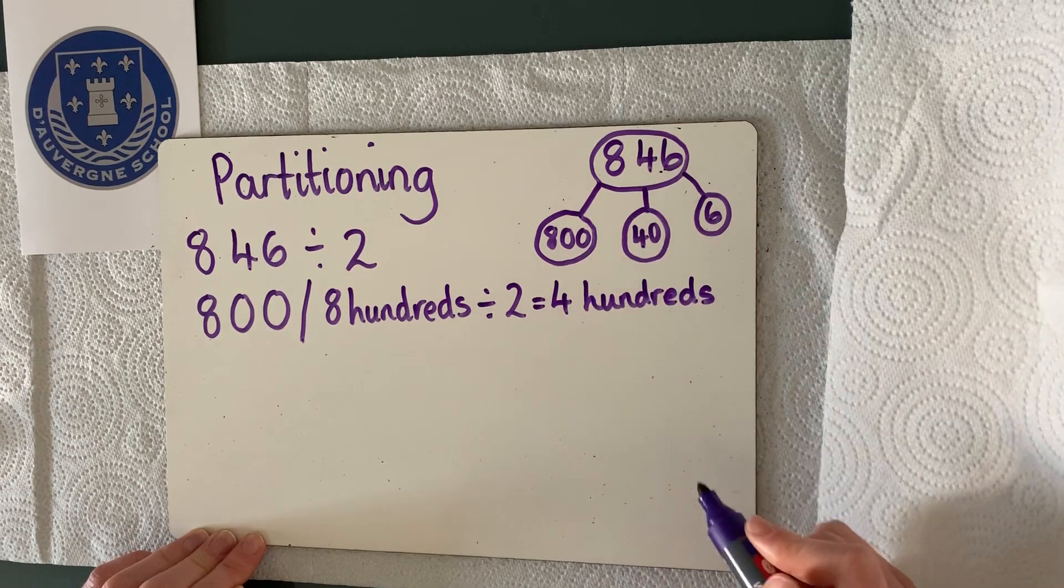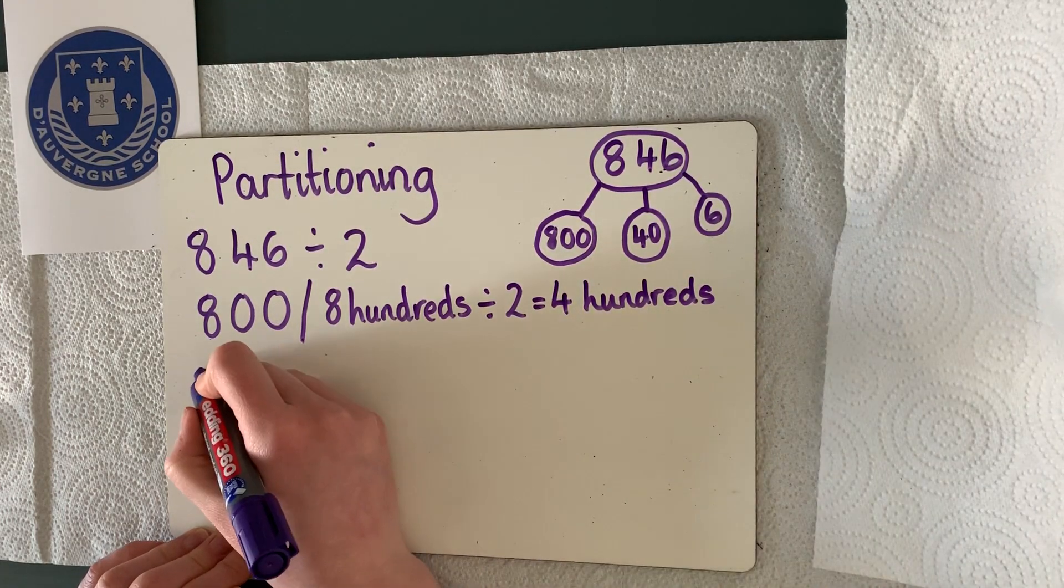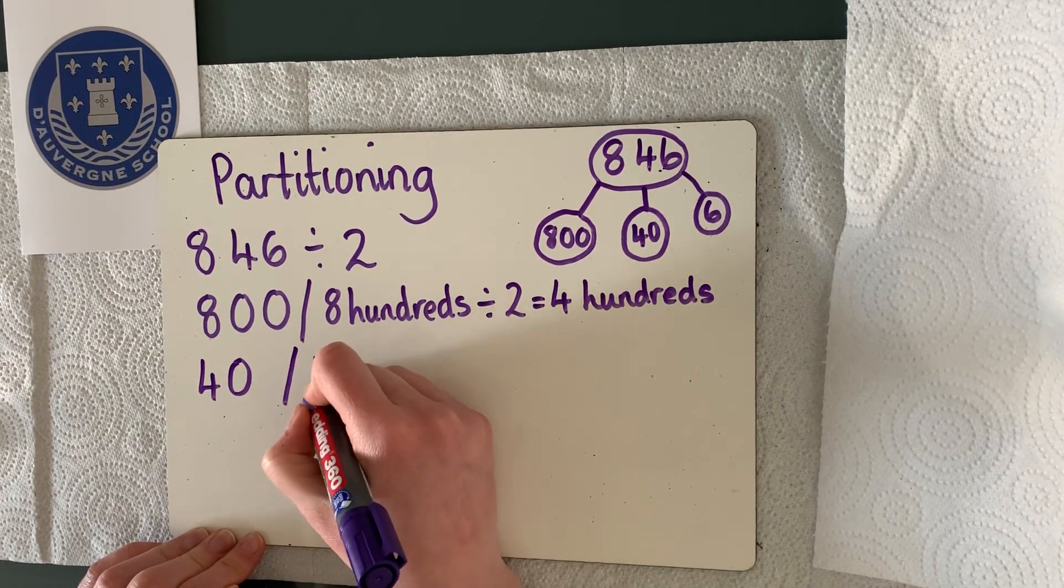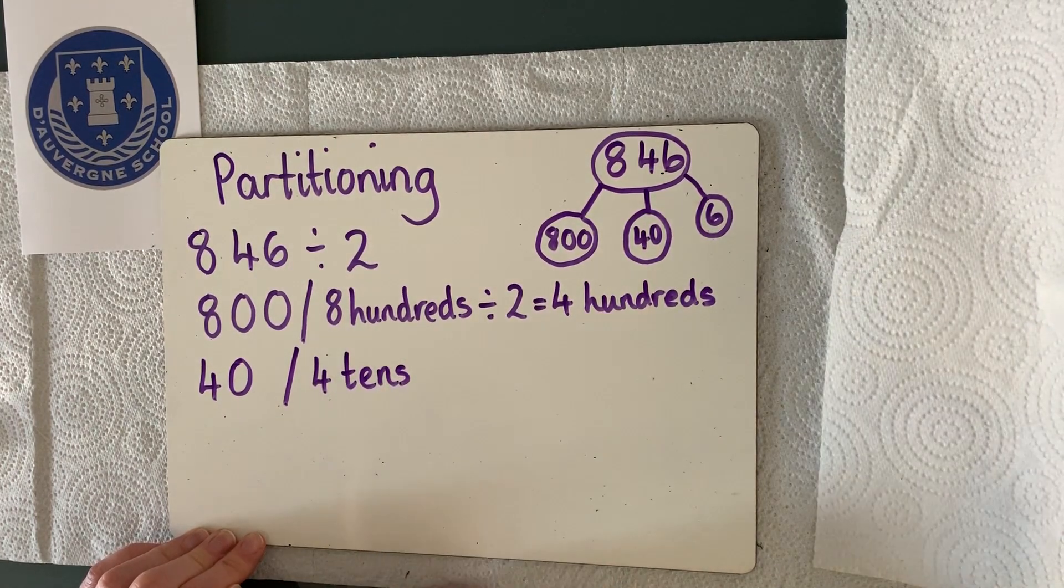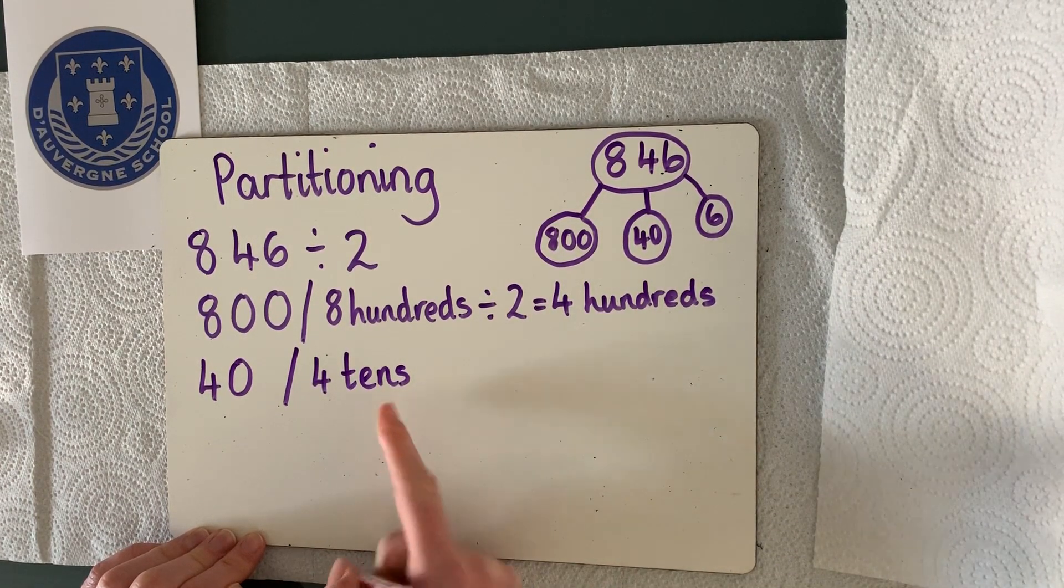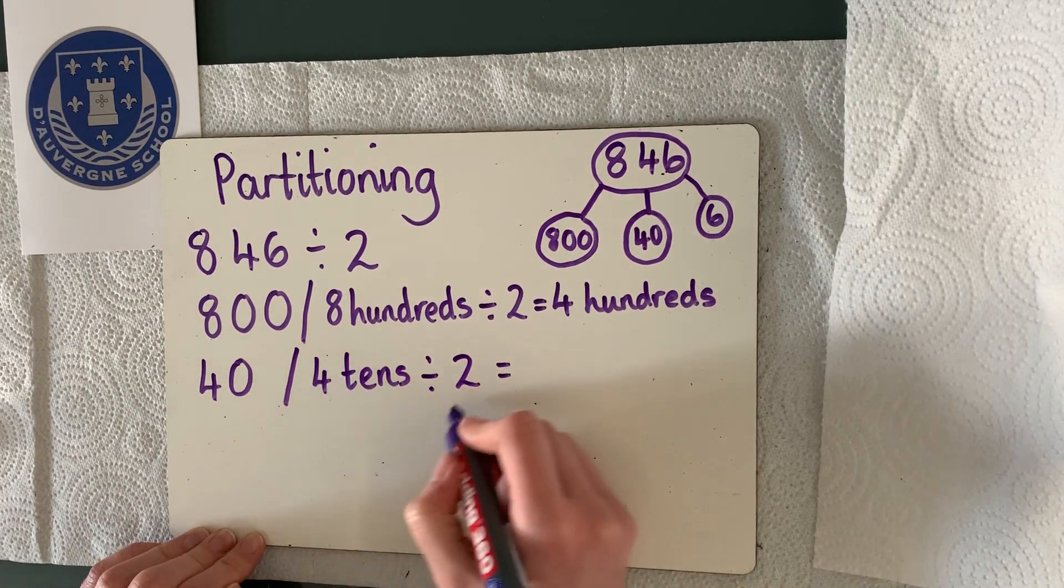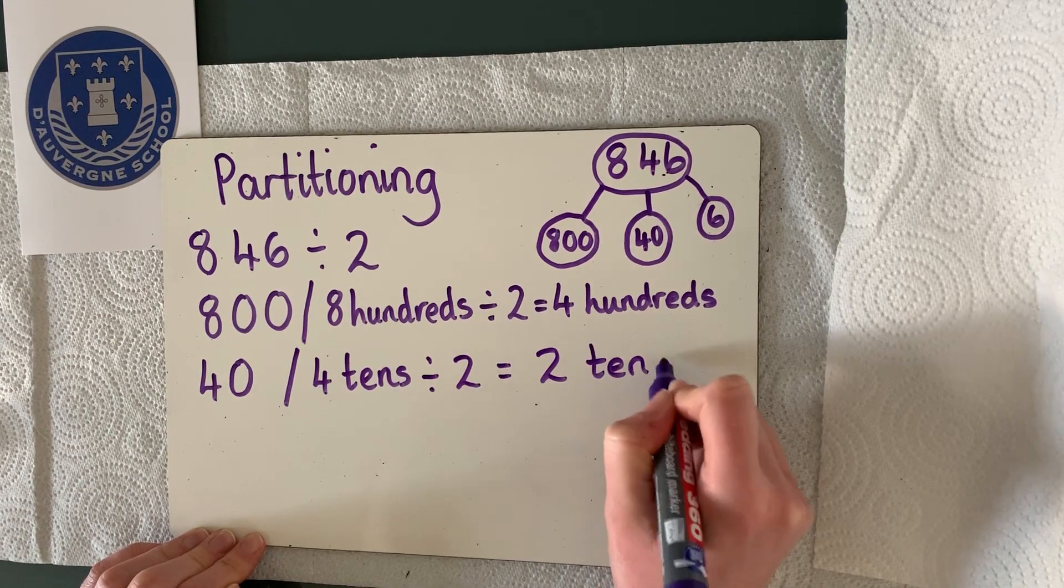Okay, so that is our hundreds dealt with. Let's now move on to our tens. We've got 40 in our tens. So that can be written as 4 tens. So if we're looking for 4 tens divided by 2, we know that 4 divided by 2 is 2. So we've got 2 tens.